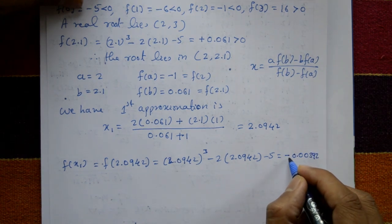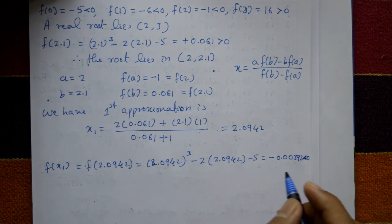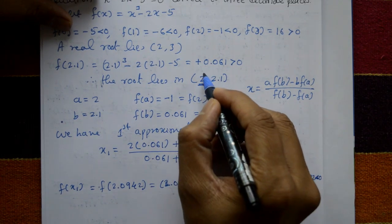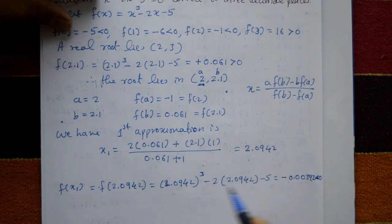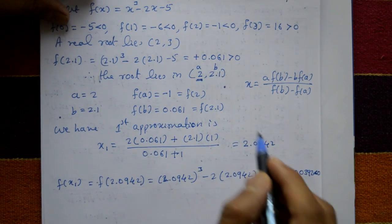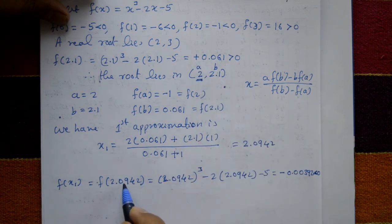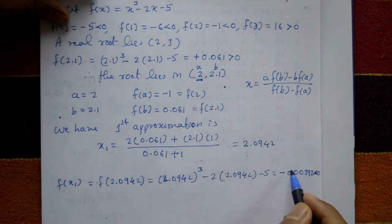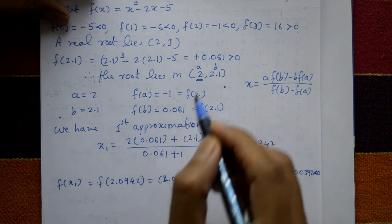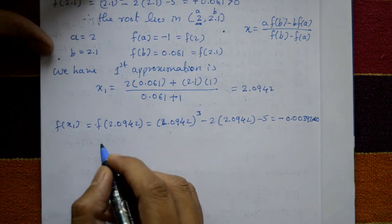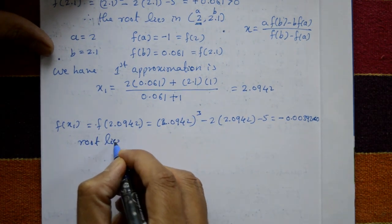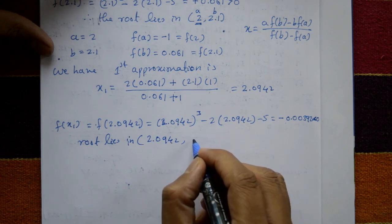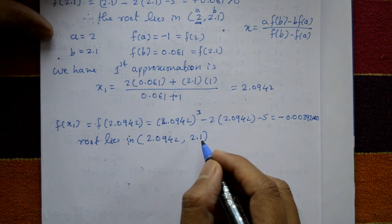Since f of x1 is negative, we change the value of a. The root now lies between 2.0942 and 2.1. So a becomes 2.0942 and b remains 2.1.